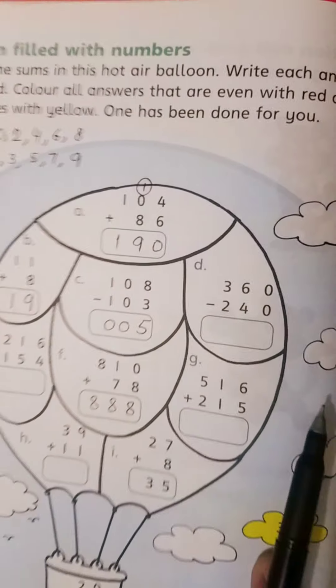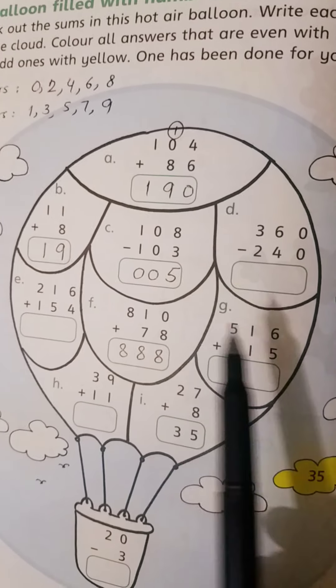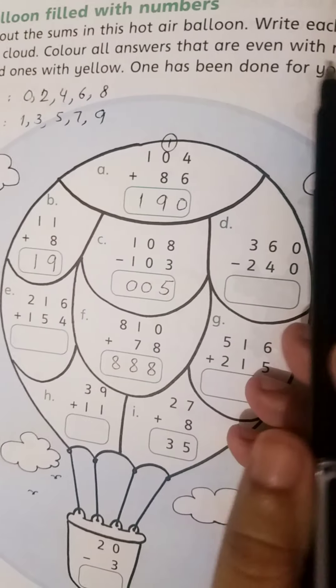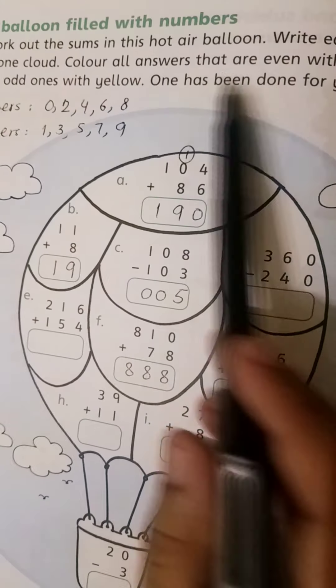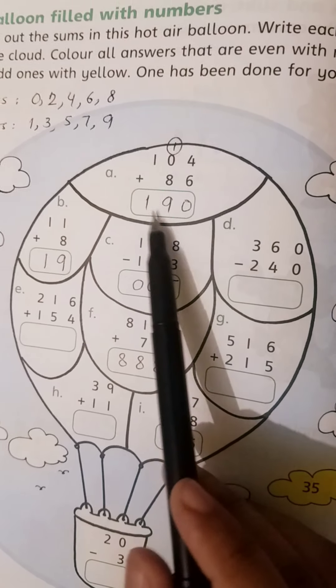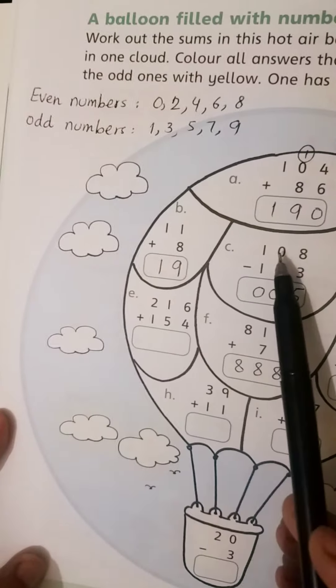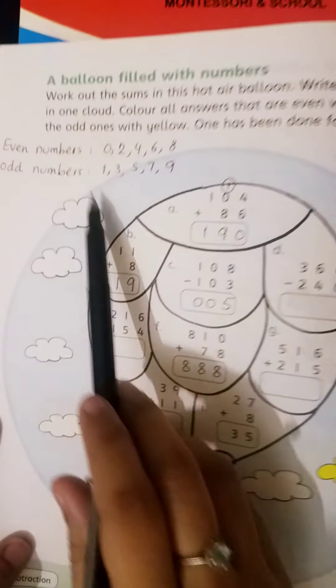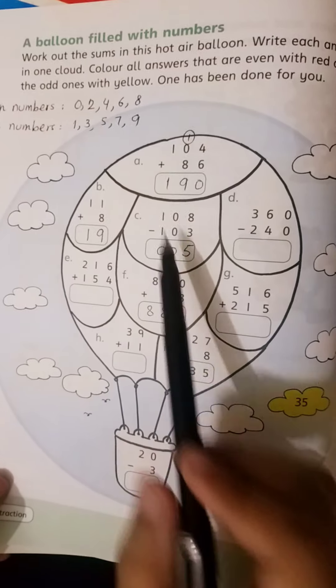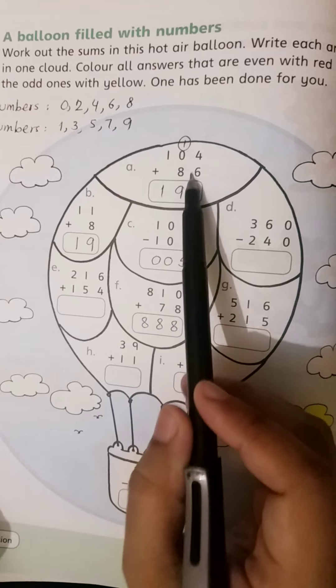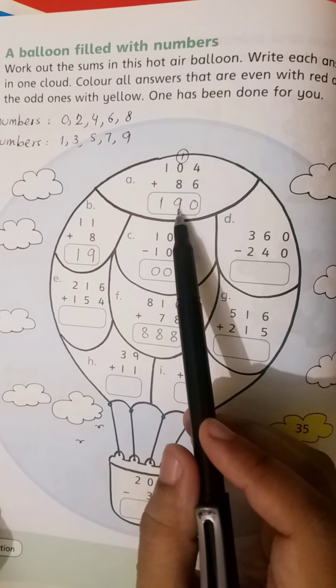Then color all answers that are even with red and the odd ones with yellow. First answer: add two numbers, answer is 190.